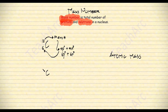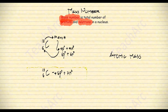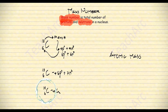Aside from carbon-12, carbon also has other isotopes. We have carbon-13 with 6 protons and 7 neutrons, and carbon-14 with 6 protons and 8 neutrons.